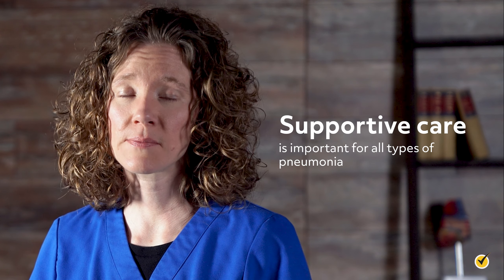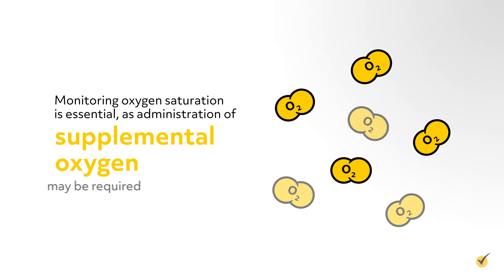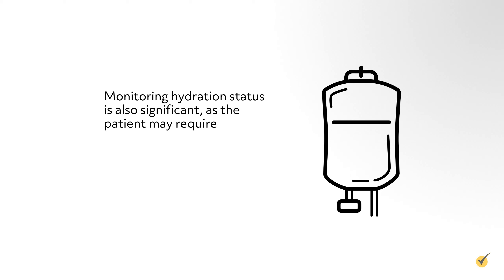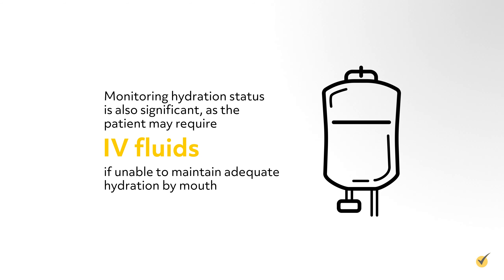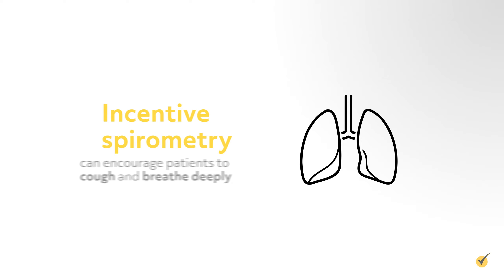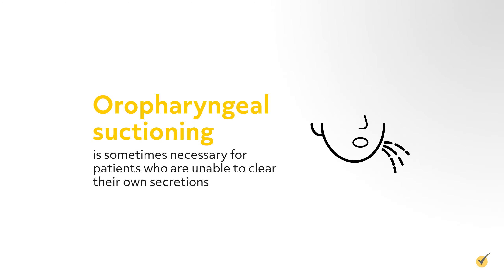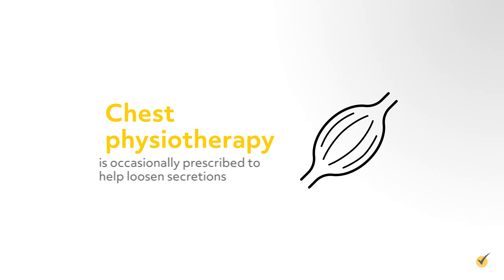Supportive care is important for all types of pneumonia. Monitoring oxygen saturation is essential, as administration of supplemental oxygen may be required. Monitoring hydration status is also significant, as a patient may require IV fluids if unable to maintain adequate hydration by mouth. Medications such as acetaminophen or ibuprofen can be used to treat fever or mild pain and body aches. Incentive spirometry can encourage patients to cough and breathe deeply. Oropharyngeal suctioning is sometimes necessary for patients unable to clear their own secretions, and chest physiotherapy is occasionally prescribed to help loosen secretions.